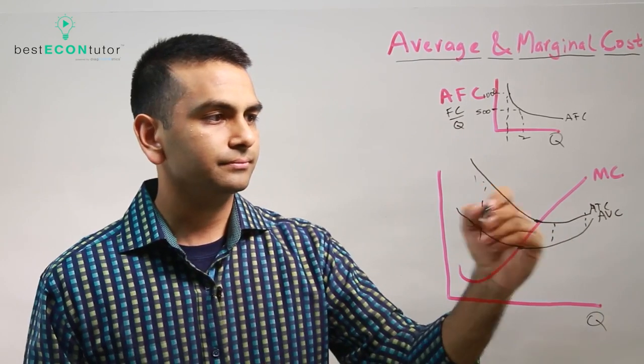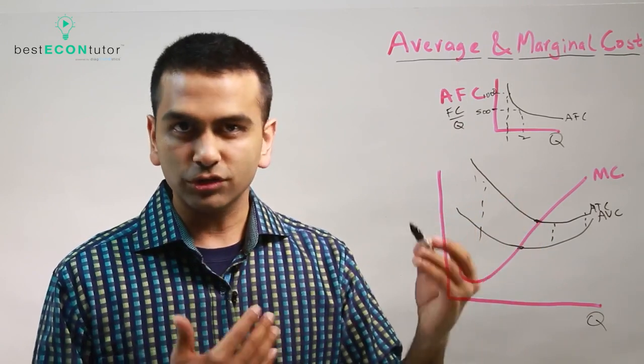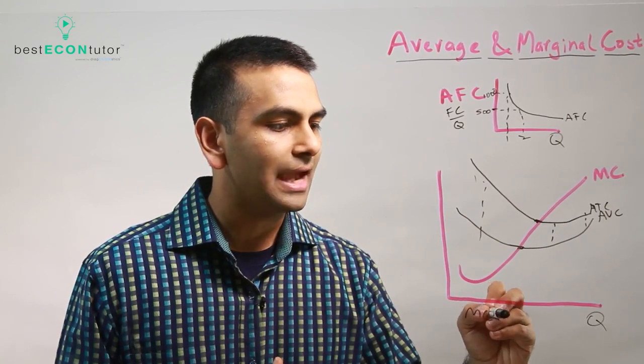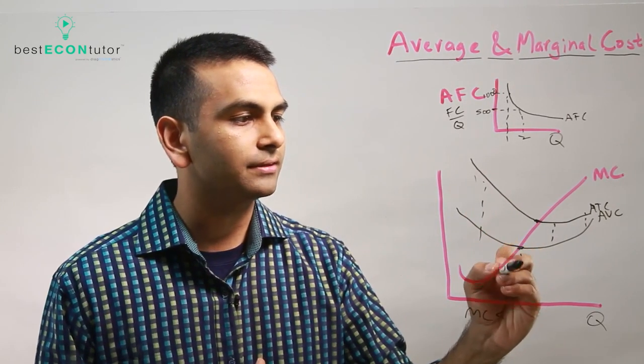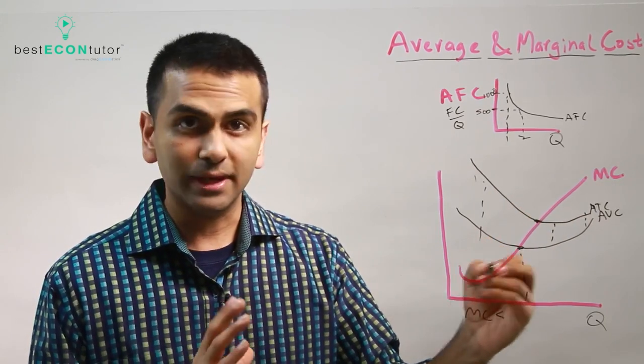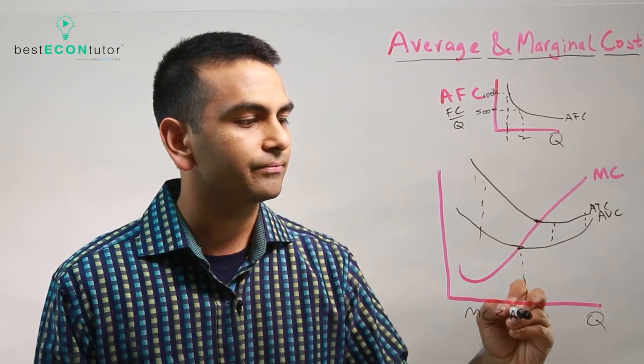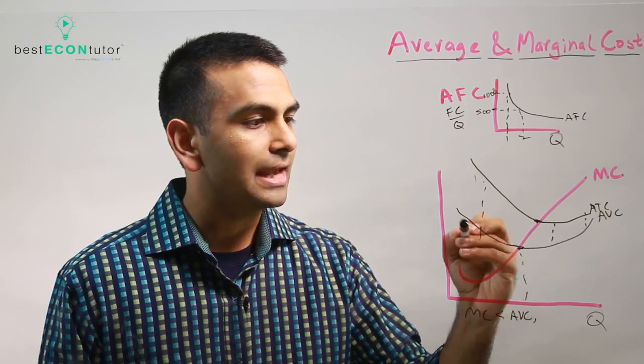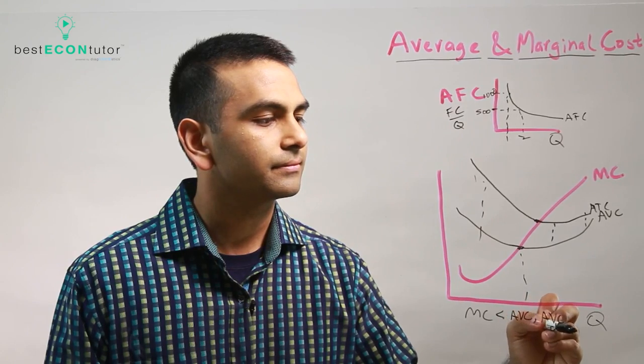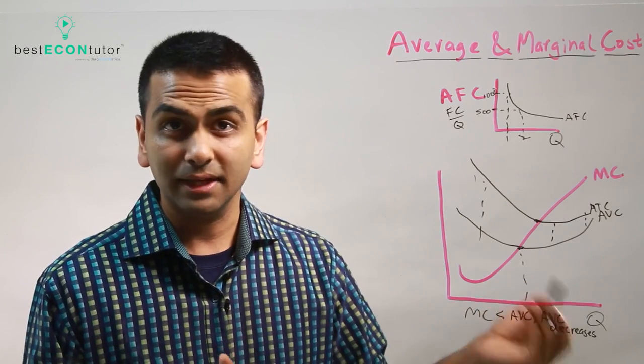Now, the important relationship here is this. It's that whenever the marginal cost, one more, is less than the average, so here at the beginning, until they intersect, so let's just focus on AVC for now. Until they intersect, the marginal, the red line here, is below the black line here. And so that's why the marginal is less than the AVC. So when that happens, the AVC, the black line, is decreasing. AVC decreases. And same is true for ATC. If MC is less than ATC, ATC decreases.